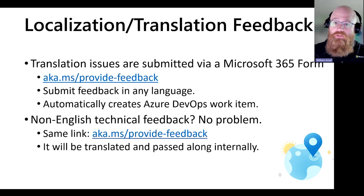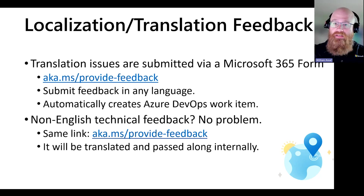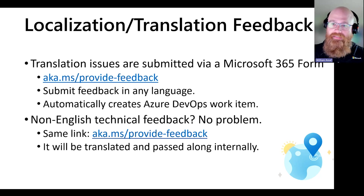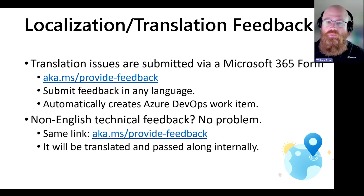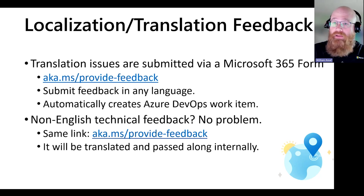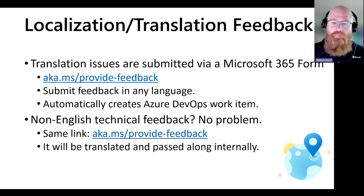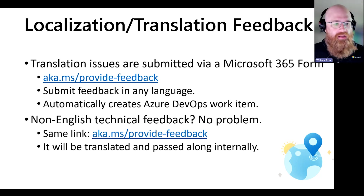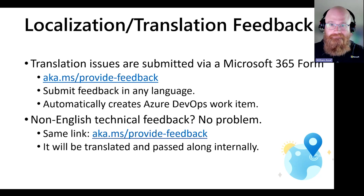If you have a translation issue in our localized versions, those are submitted through a Microsoft 365 form. Submit your feedback in any language and it will be translated and routed to the correct team. Per the localization team, feedback is usually triaged within 24 hours, and if it's a valid fix, it'll be implemented in one to two weeks. If you're most comfortable submitting feedback in a language other than English, no problem — use the same form and it will be passed along to the proper content team. That link is aka.ms/provide-feedback.